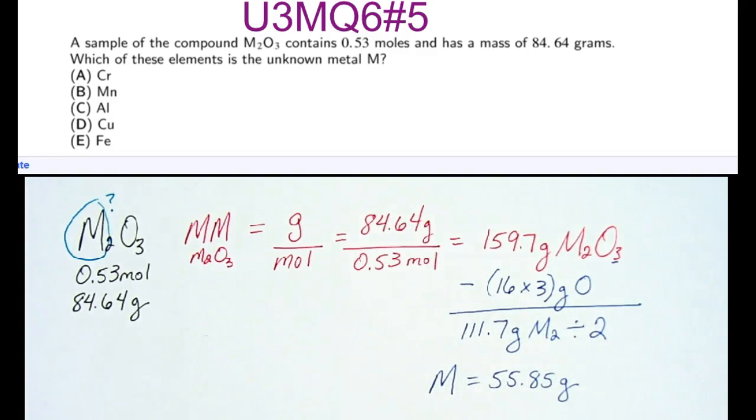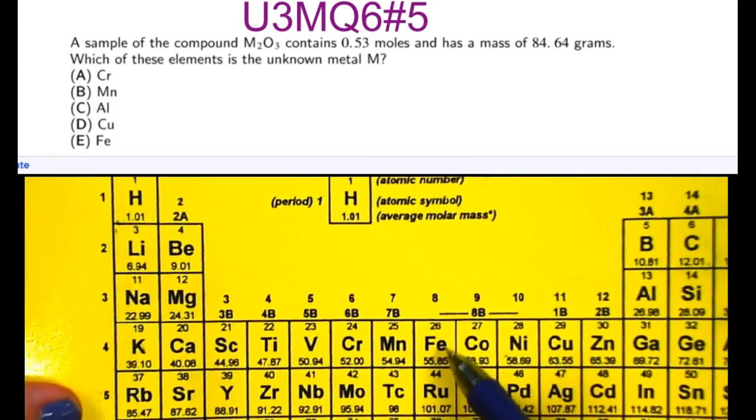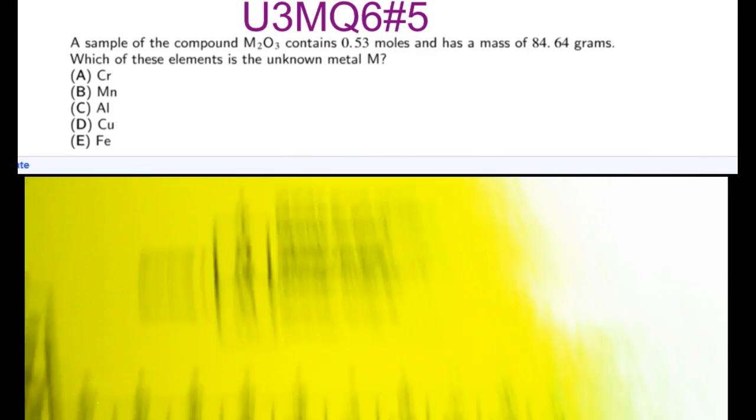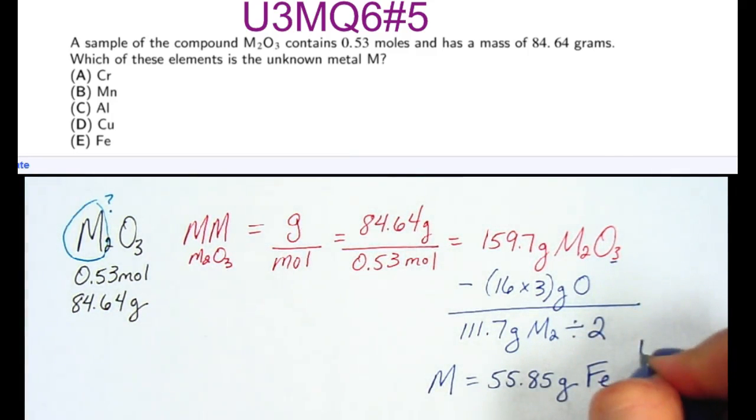If we go to the periodic table, 55.85 grams corresponds to iron. So this must be iron, which is letter E.